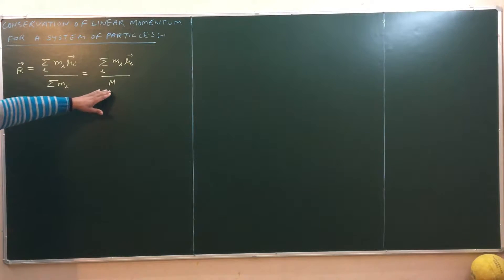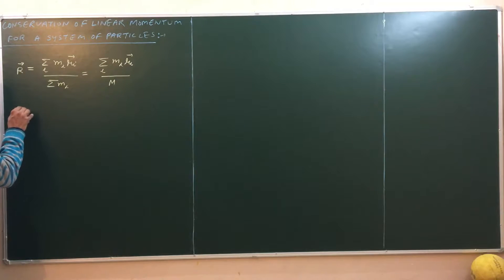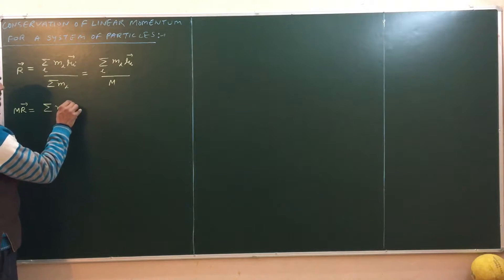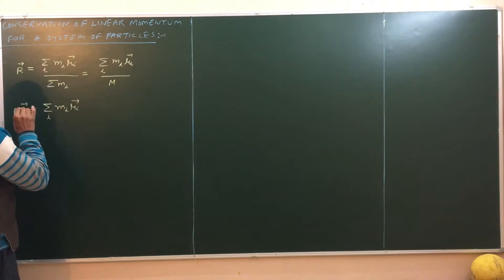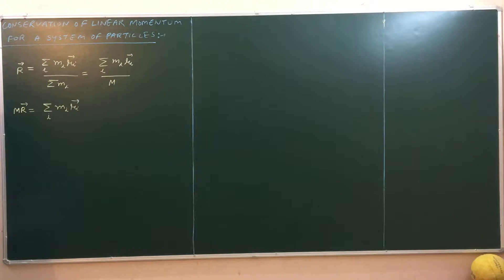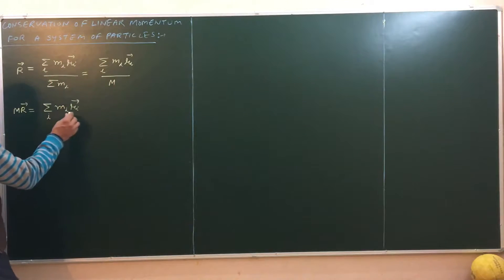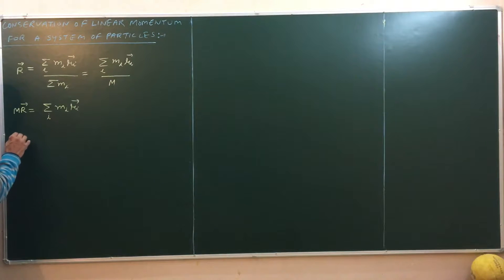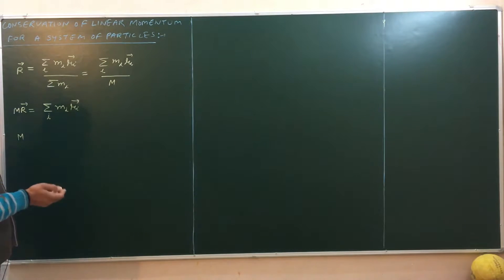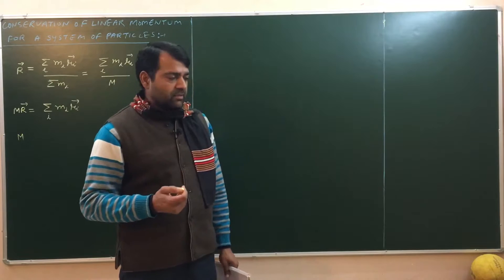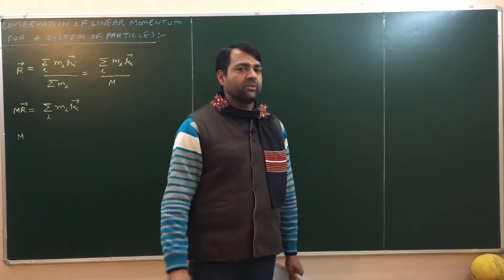Now, taking M with r, we get M r vector equals sigma m_i r_i, summation over i. Differentiating both sides with respect to time t, we will get M times the derivative. As stated in Newtonian mechanics, M is assumed to be constant.